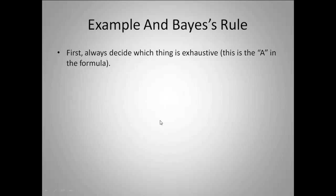When we do Bayes' Rule, it is absolutely critical to first always decide which thing is the exhaustive piece. That's the A in our formula — what items are going to fill the sample space? And then the other piece, the B, is going to be that item that occurs in conjunction — that oval.